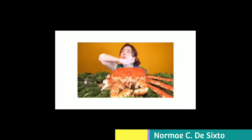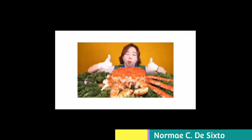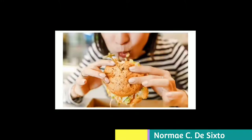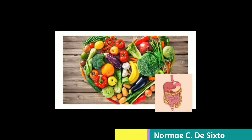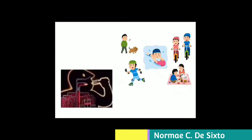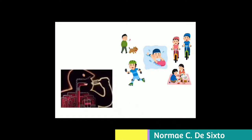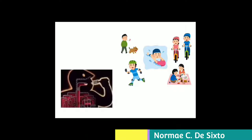Most of us will answer: from the food we eat. But that is only a half-truth. The food we eat is the source of energy, meaning the energy is stored inside the food. In order to derive energy from it, the food needs to be broken down, and this requires oxygen. That explains the importance of respiration — it is the process in which food is broken down in the cells with the help of oxygen to release energy.